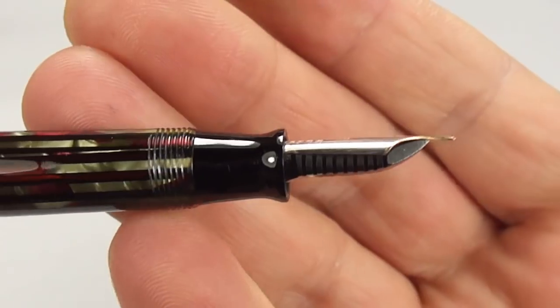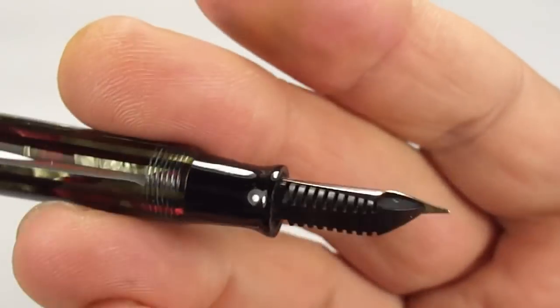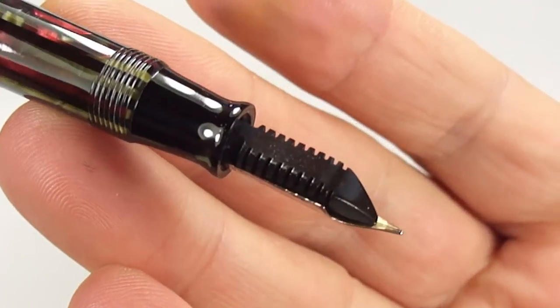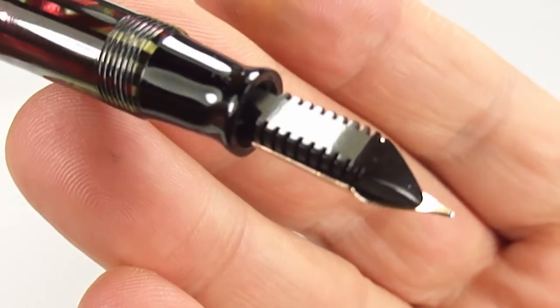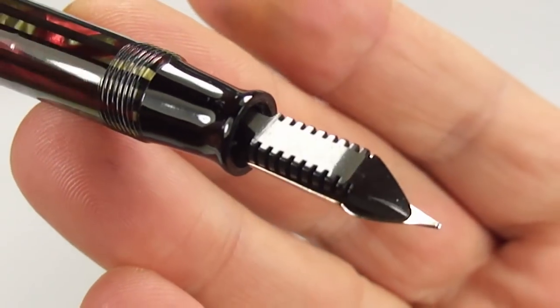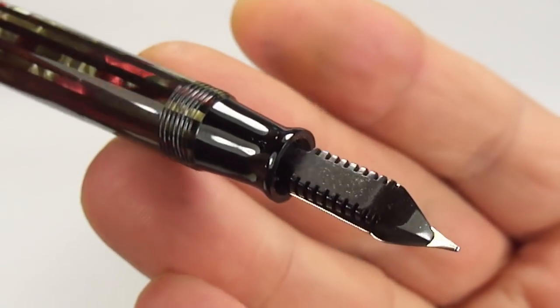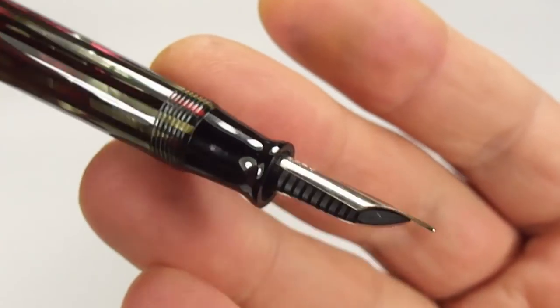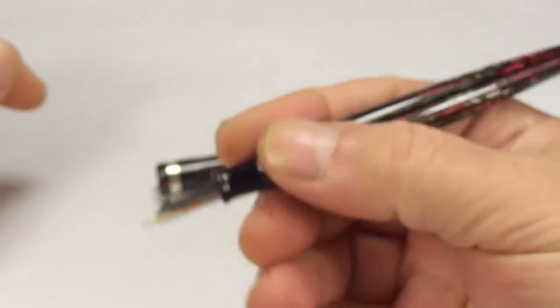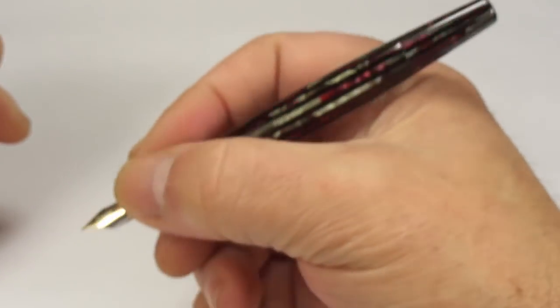Okay, there's a sideways view for you. And let's show you the feed underneath. It's got the standard Parker comb feed, as always. You can see everything has been cleaned.